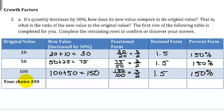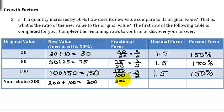You can pick any value you want; choosing 200: 200 plus half of 200, which is 100, gives us 300. The ratio 300 over 200 again simplifies down to 3 halves, 1.5, and 150%.